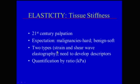Elasticity is tissue stiffness and has become the 21st century palpation. The expectation is that malignancy is hard and something benign will be soft. However, there is superimposition of both. There are two types: strain and shear wave elastography. We still need to develop descriptors for these two types of elastography, but we can also now quantify the amount of tissue stiffness to better determine if the lesion is hard or soft.